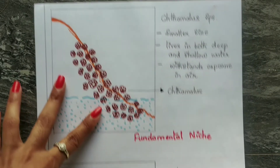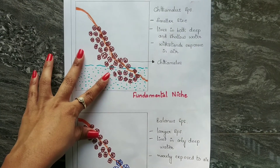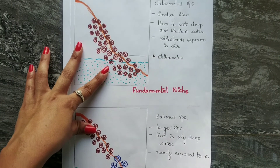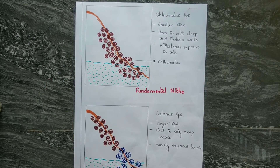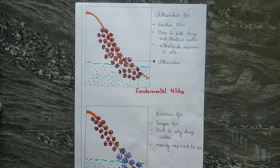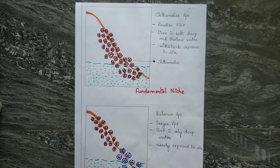Let us understand this with an example. There are two species — Chthamalus and Balanus — which are barnacles that live near the rock-shore environment in the seashore. Each species is tolerant of a range of environmental conditions such as temperature, light, and moisture, which are essential for their survival, growth, reproduction, and feeding.